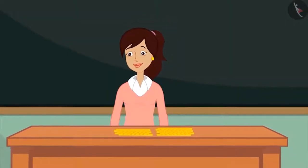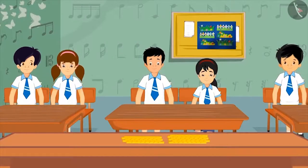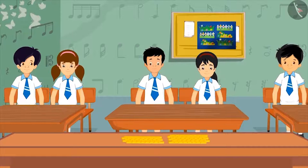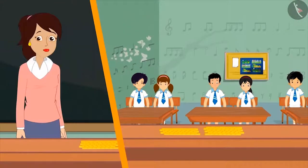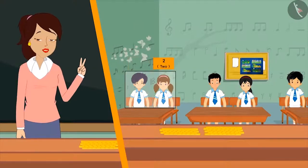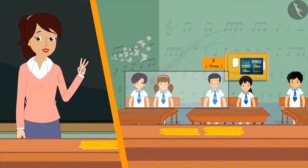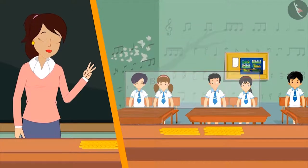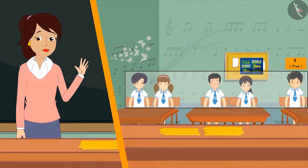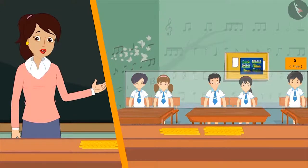To find out the number of children in the class, she makes the children stand in a row and starts counting them one by one. So he is 1, she is 2, he is 3, she is 4, and he is 5. There are 5 children in the class today.